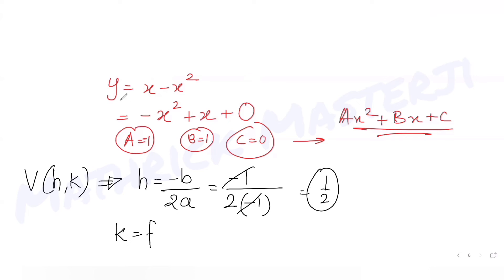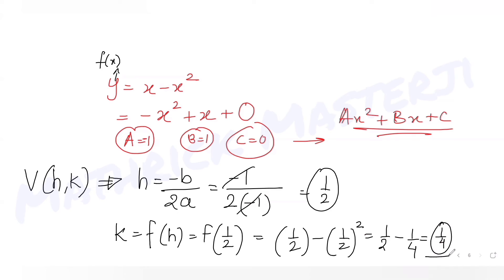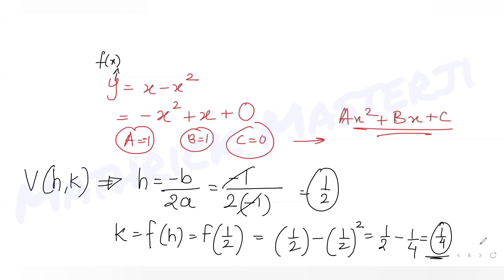To find the y-coordinate of the vertex, we substitute x = 1/2 into the parabola equation: y = 1/2 minus (1/2) squared = 1/2 minus 1/4 = 1/4. So the vertex V has coordinates (1/2, 1/4).